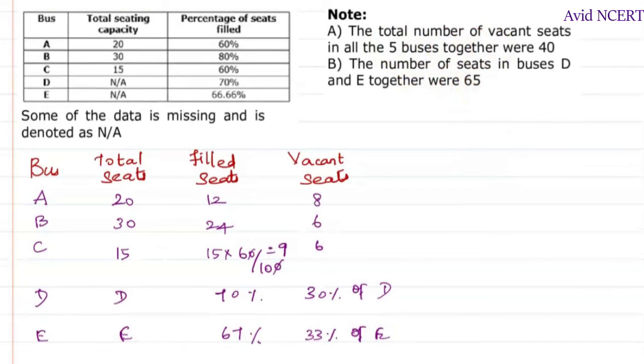Now from the note here, the total number of vacant seats in all the 5 buses together is 40, which means for bus A, B, C it is 8 plus 6 plus 6 is 20. So the remaining 20 seats will be from 30% of D plus 33% of E. From note B, the number of seats in buses D and E together, the total seats from D and E is 65. So D plus E equals 65, and 30% of D plus 33% of E equals 20.